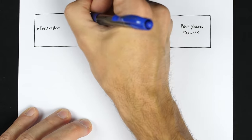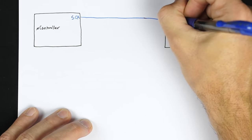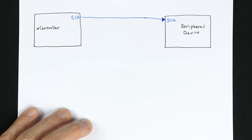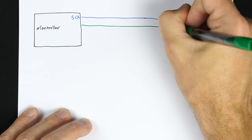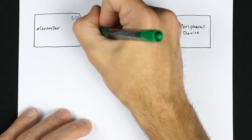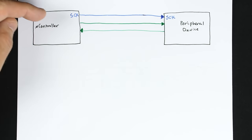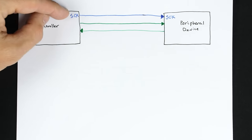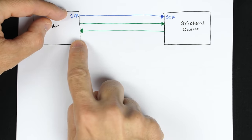The interface between them is typically a four-wire interface. You always have a clock, and the clock signal is always generated by the controller. Then you've got two data signals, one going in each direction — one from the controller to the peripheral device, and one from the peripheral device back to the controller. Each time the controller toggles this clock signal, one bit gets sent in each direction.